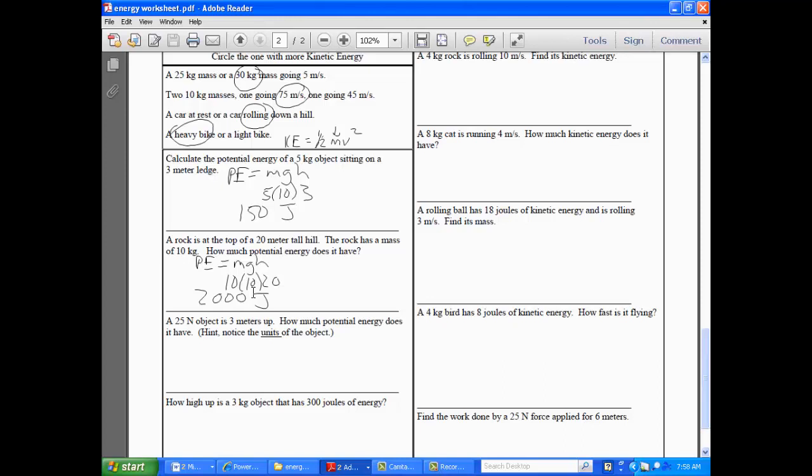All right. Next one. A 25 Newton object is 3 meters up. How much potential energy does it have? So it says, hint, notice the units of the object. So if we want potential energy, remember, guys, mass always has to be in what unit for these formulas? For mass? Kilograms. All right. So we have to convert this into kilograms by dividing it by 9.8. We'll divide it by 10 just to make it a little bit easier. So, therefore, the mass is going to be about 2.5 kilograms. So now we have mass of 2.5. We have gravity of 10. We have a height of 3. So it pretty much comes out back to multiplying 25 times 3 back to our original. Works out that way. So we are going to have 25 times 3 is going to be 75 joules. All right. Questions with that?